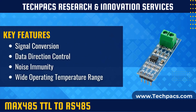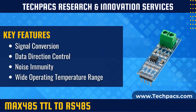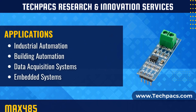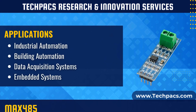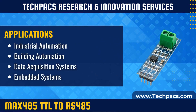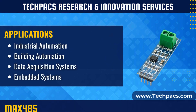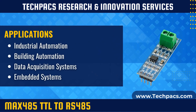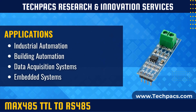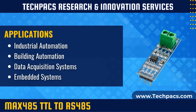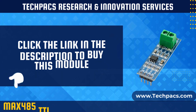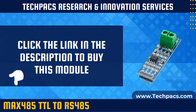The MAX485 TTL to RS485 converter module is a versatile solution for integrating TTL-level devices into RS485 networks. By converting TTL signals to RS485 differential signals, it extends the communication range and enhances noise immunity, making it ideal for industrial automation, building management, and remote monitoring applications. This compact and reliable module ensures seamless data transmission over long distances, catering to diverse requirements in embedded systems and industrial environments.